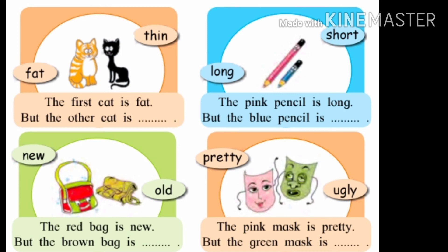Now come to the next picture. Two faces are given and two words are given: pretty and ugly. Complete the sentence: The pink mask is pretty but the green mask is ugly. Gulabi mask ha sundar ahe, parantu hirua mask ha ghan ahe. Pretty and ugly, both words are opposite to each other.